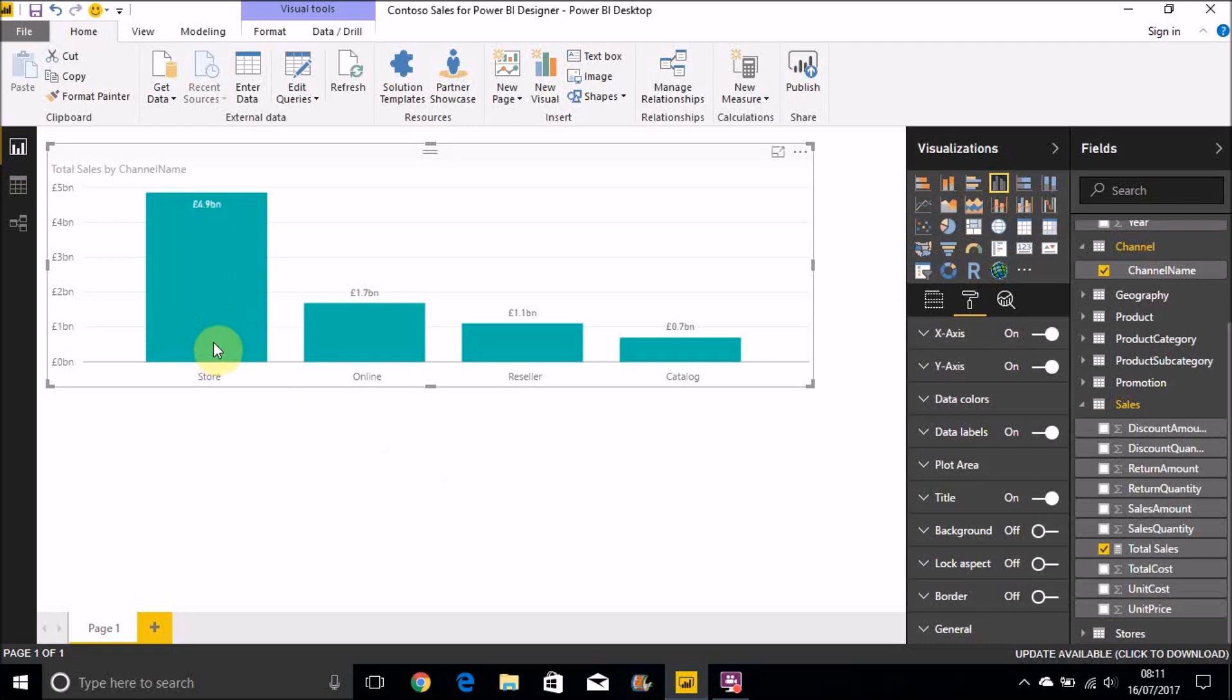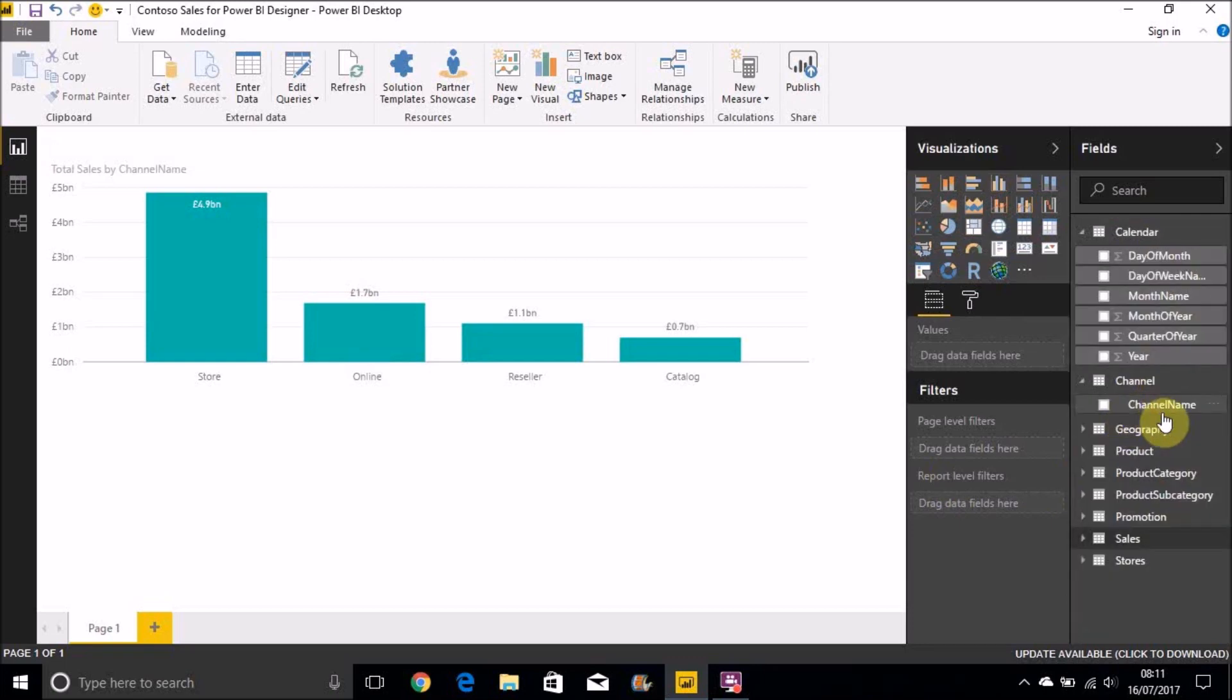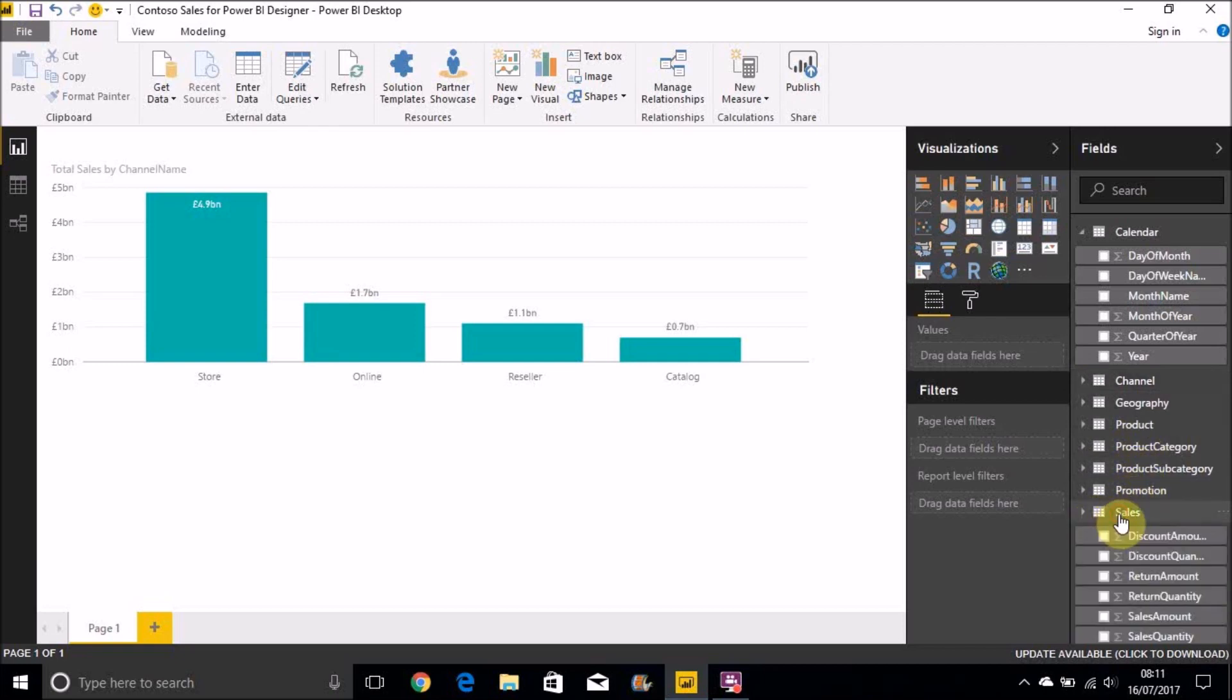And let's show the values there, the data labels. So we can see there for store sales, we've got a value of 4.9 billion. And we actually now create a new measure that just shows those sales for store.